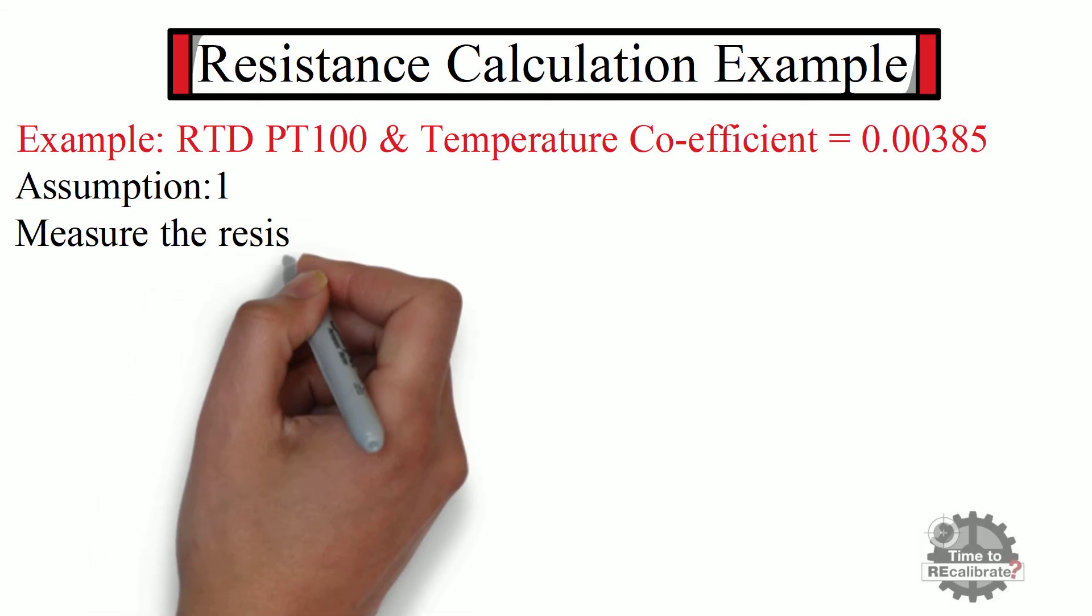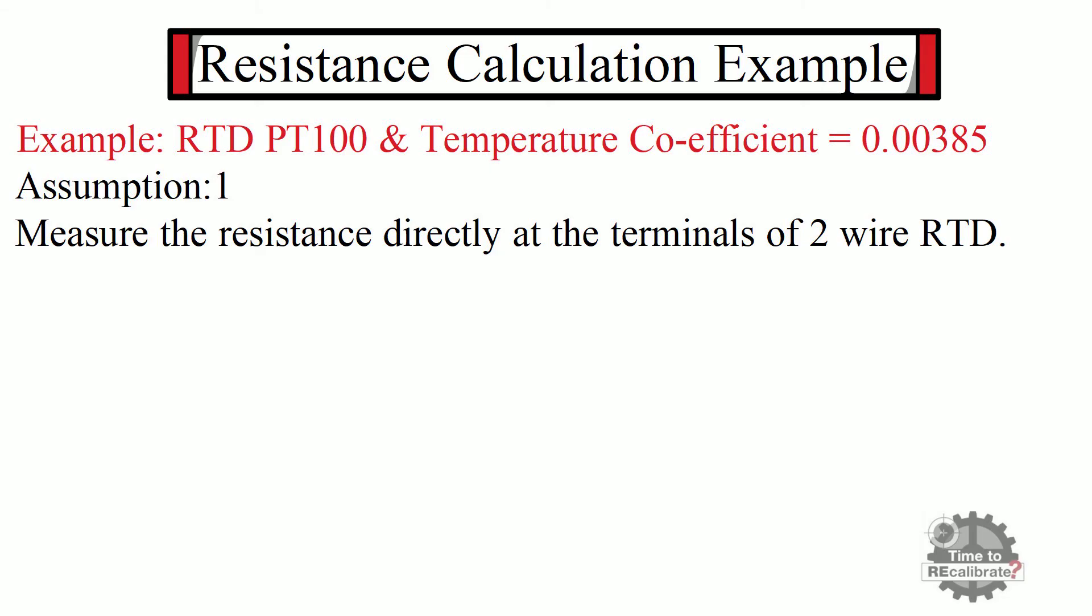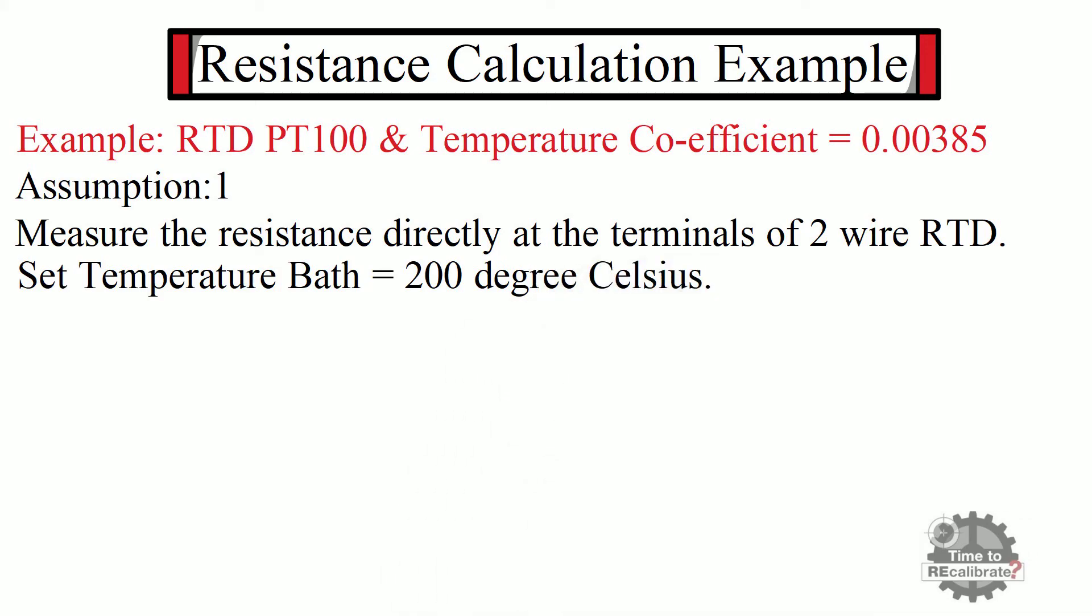Now let's assume that we are measuring the resistance directly at the terminals of 2-wire RTD. In other words, we are measuring the resistance without any lead wires. After this, put the RTD in a temperature bath and set the temperature of the temperature bath to 200 degrees Celsius.